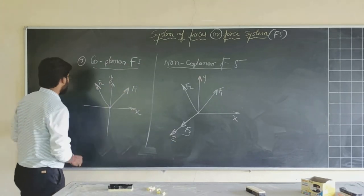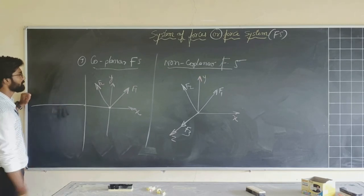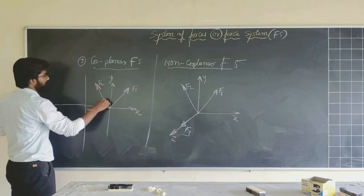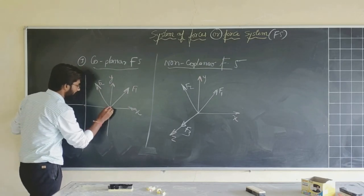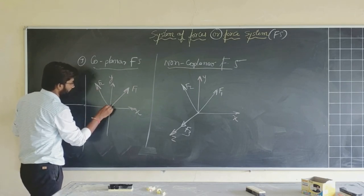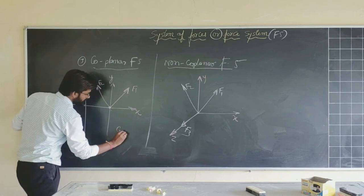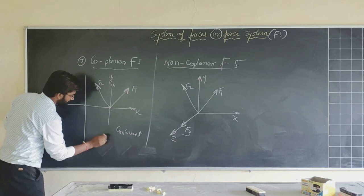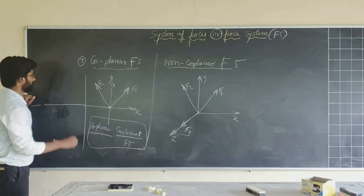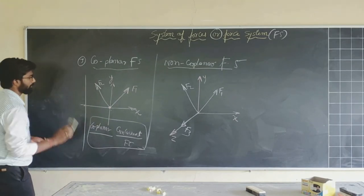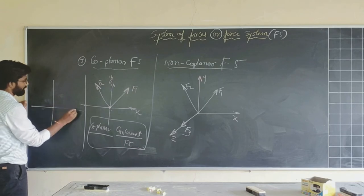We now combine these classifications. A force system studied in two axes where forces act at a single point is both coplanar and concurrent — we call it a coplanar concurrent force system. You may also encounter a coplanar non-concurrent force system, where we are still dealing with x and y axes but forces act at different points.